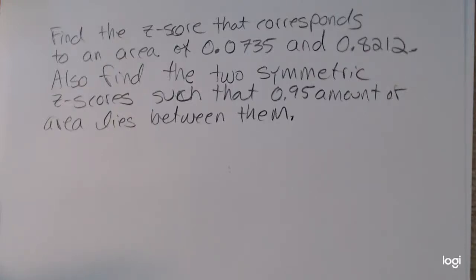I'm going to use the standard normal table in reverse. That's the case where we're given an area or a probability first, and we're working backwards to find the corresponding z-score.